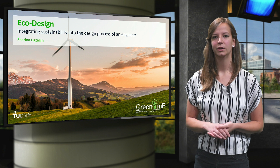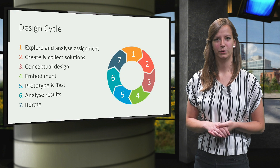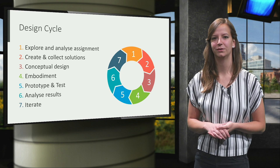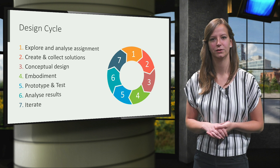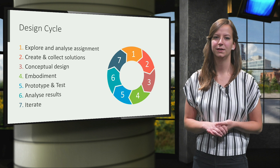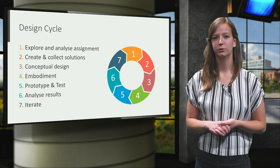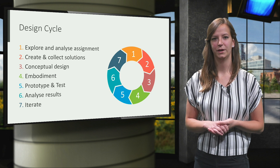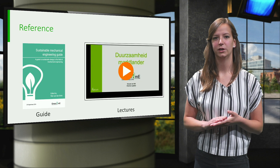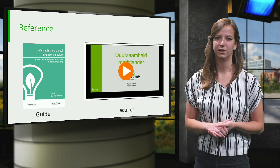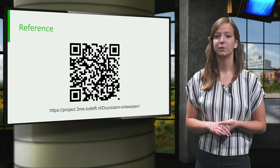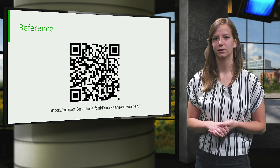Let's start with an overview. Chances are you are already familiar with this design cycle. Our goal is to show you how and when you can include sustainability into your design process. For each step the goal will be mentioned and then we will address how sustainability can be taken into account. It is up to you to choose which methods suit your product best and to which extent you will use them. All the methods used in this video are treated in the Sustainable Mechanical Engineering Guide and the two lectures given by Green and me. Those can be found by going to the website or scanning the QR codes.